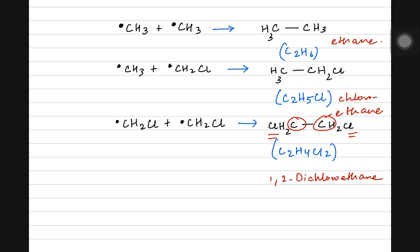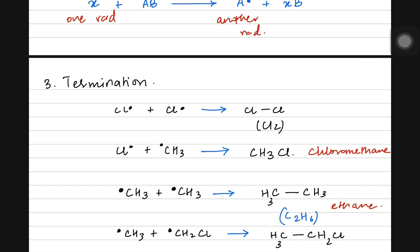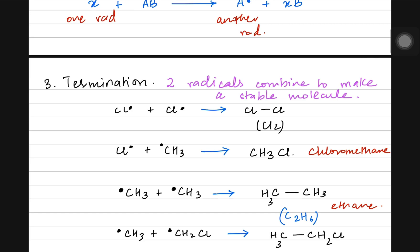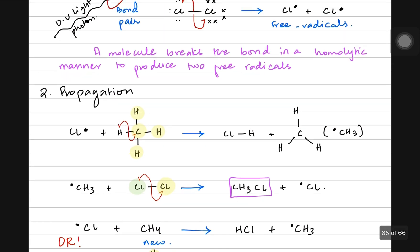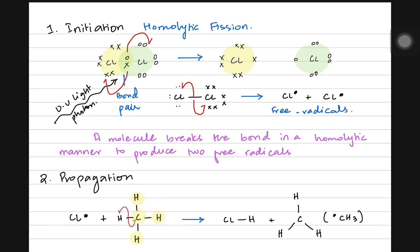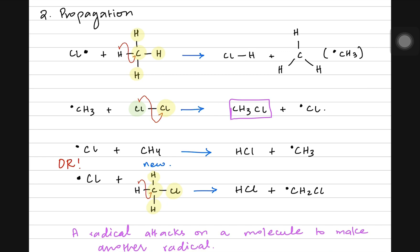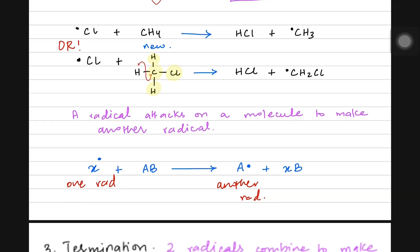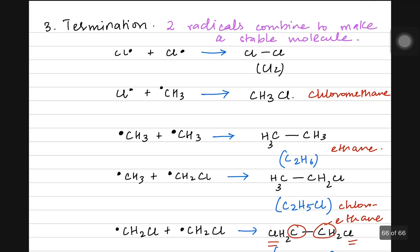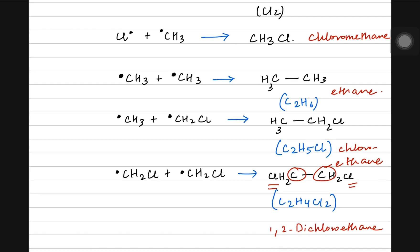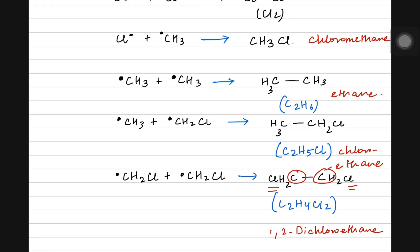So the termination step means two radicals combine to make a stable molecule. To summarize, free radical substitution includes: initiation — homolytic fission of the Cl–Cl bond by UV light; propagation — one radical attacks a molecule to produce a new radical; and termination — all random radicals can bump into each other to form stable but unique molecules. In the next class we'll be doing past paper questions on free radical substitution. Stay tuned!